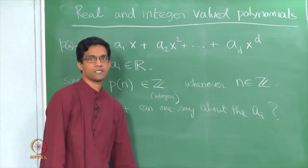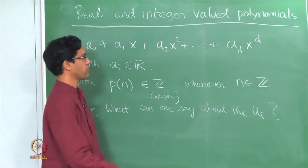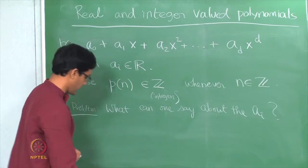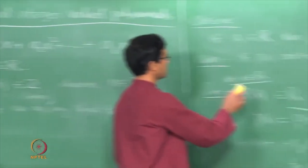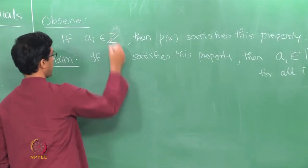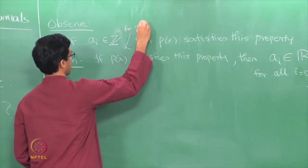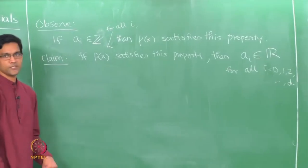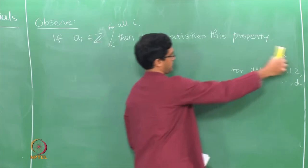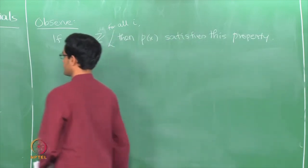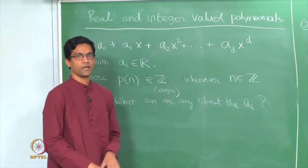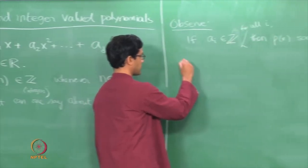Observe a similar thing can serve as a starting point: if all the ai's are integers — for instance if your polynomial is 1 plus 2x plus 3x squared with integer choices for the ai's — then plugging in x equal to an integer will of course give an integer answer. But just like before, we really want to worry about the converse: is it true that that is the only possibility? Is it possible that a polynomial takes integer values on integers but does not necessarily have integer coefficients? It turns out the converse is actually not true in this case.